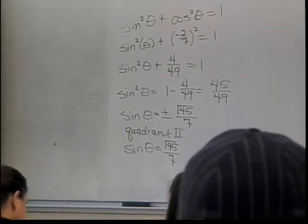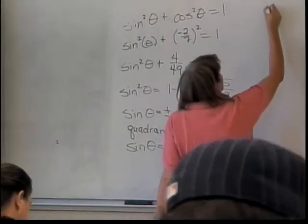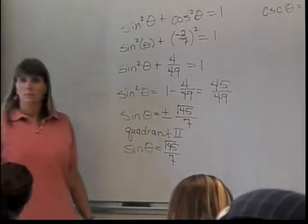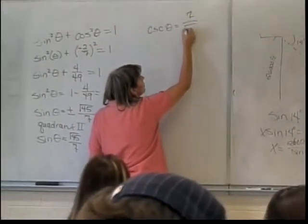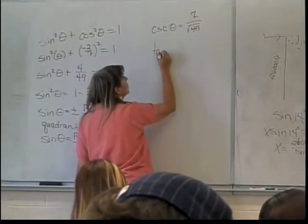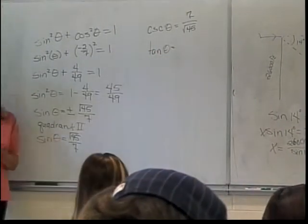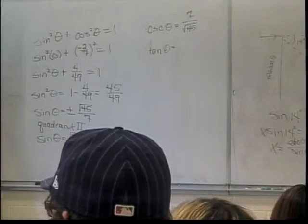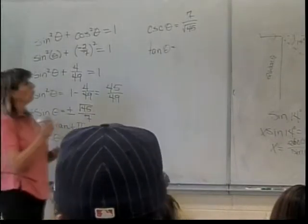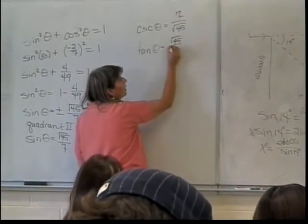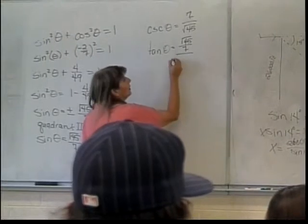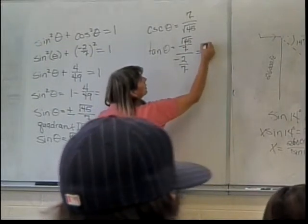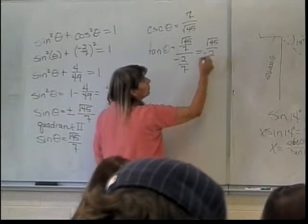Let's put all the rest of them up. What's cosecant? Cosecant of theta - 7 over square root of 45. What's the next one up there? What's my tangent of theta? Square root of 45 over negative 2. Is everybody okay with that? Let me put that all together. So the square root of 45 over 7 is my sine of theta divided by negative 2 over 7 which is my cosine of theta. Since both the 7's are in denominator that will leave me with the square root of 45 over negative 2.